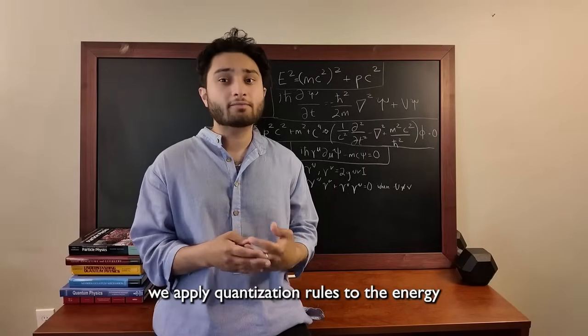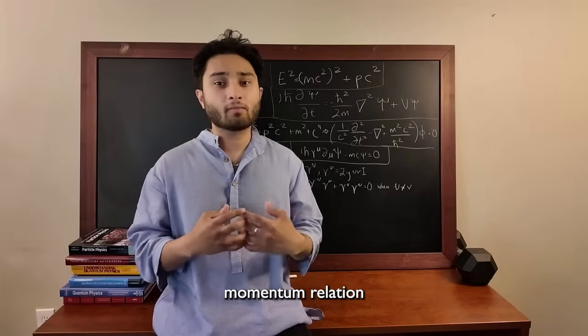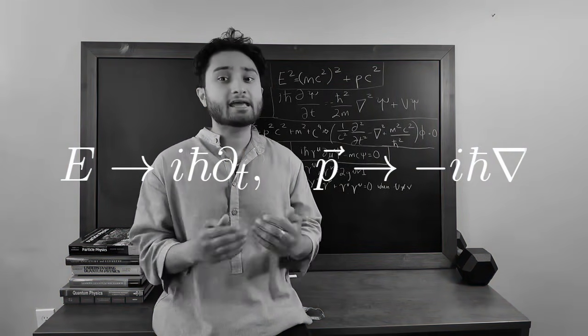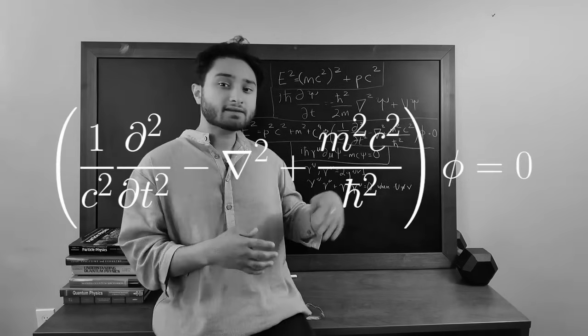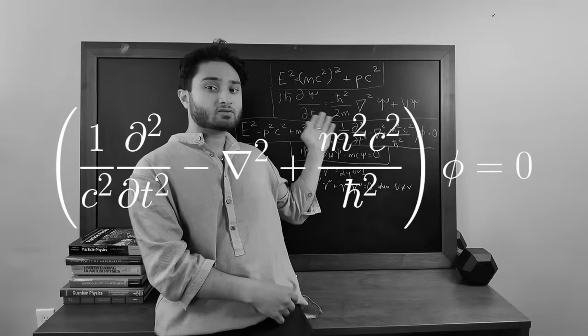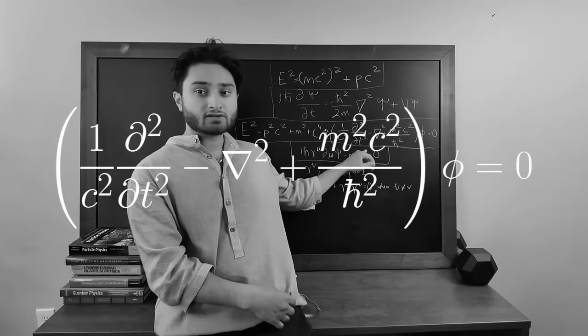To make quantum mechanics relativistic, we apply quantization rules to the energy momentum relation. To replace E and p with operators, plugging these into E squared equals mc squared squared plus pc squared gives us the Klein-Gordon equation.